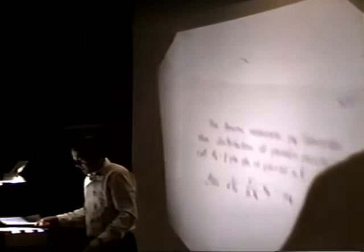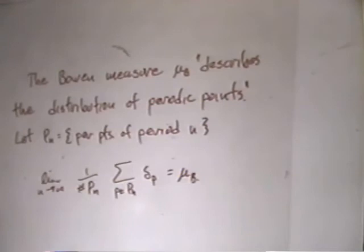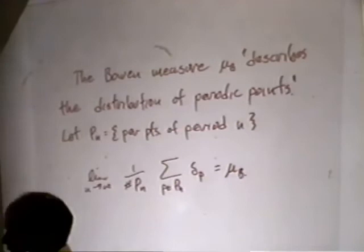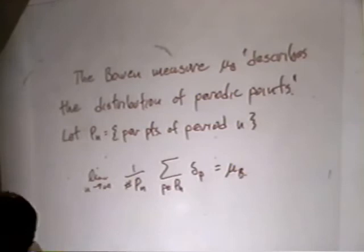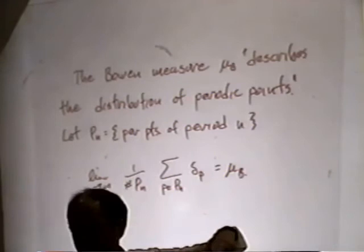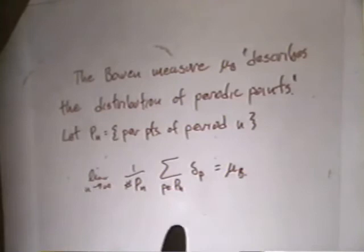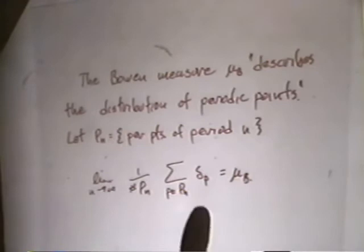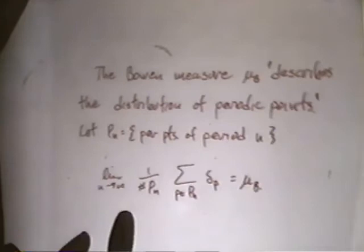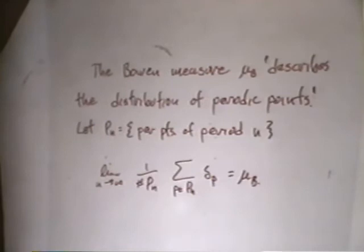The Bowen measure — call it mu sub b — describes the distribution of periodic points in the following sense. If we let P sub n be the set of periodic points of period n — in this case these are saddle periodic points, they have an unstable manifold and a stable manifold — then we can turn that set into an analytic object by placing a Dirac mass at each of those points, normalize it to have total mass one, and if we take the limit as the period increases, it converges to this Bowen measure mu sub b. That's the sense in which the Bowen measure describes the distribution of periodic points.